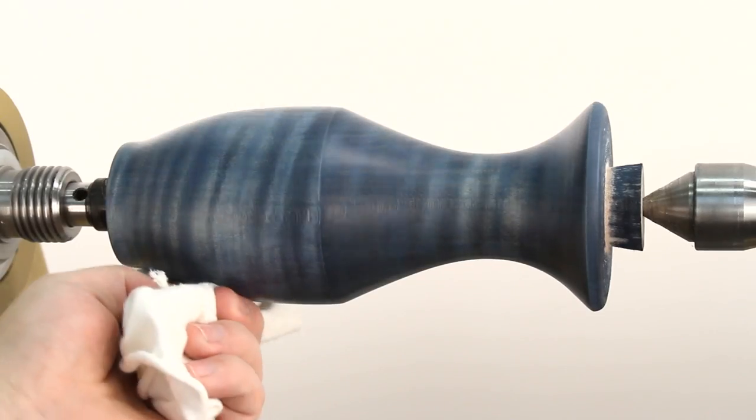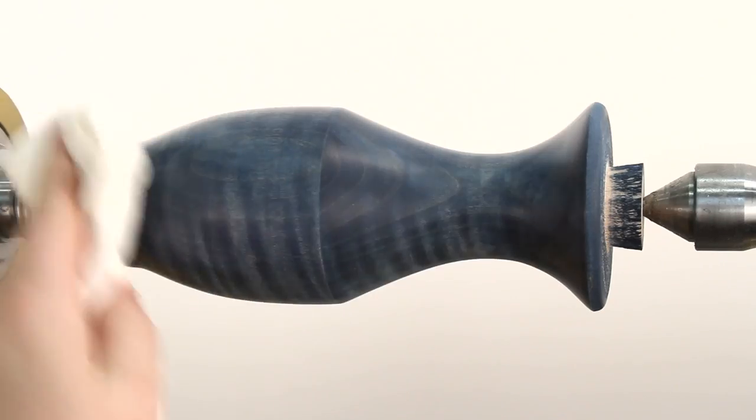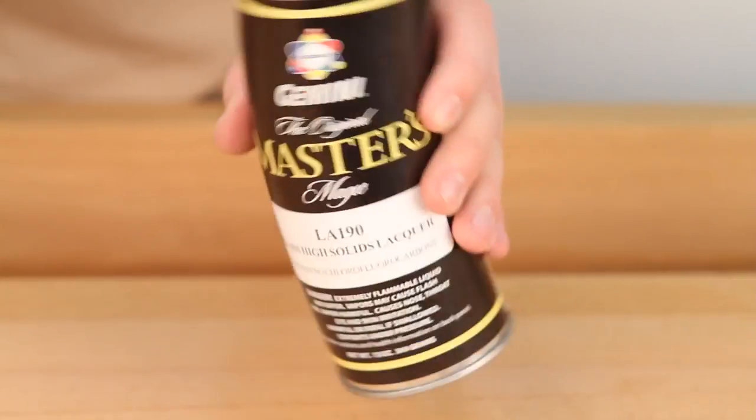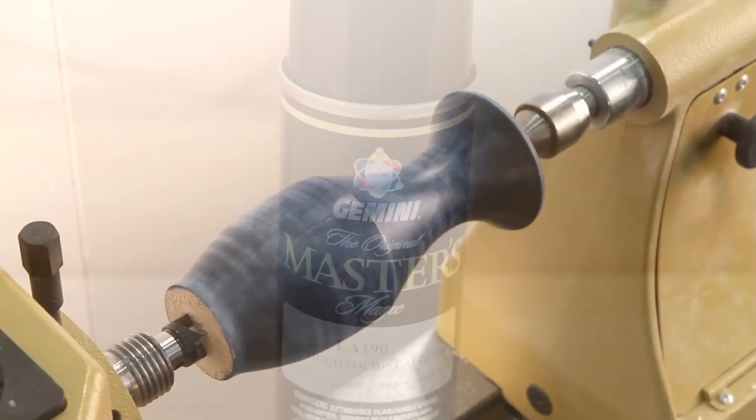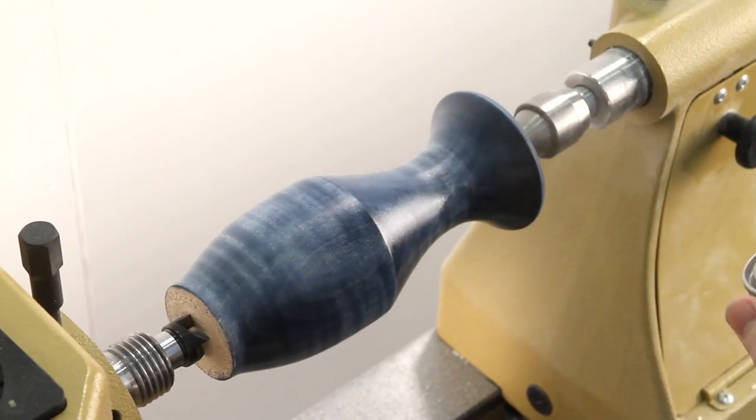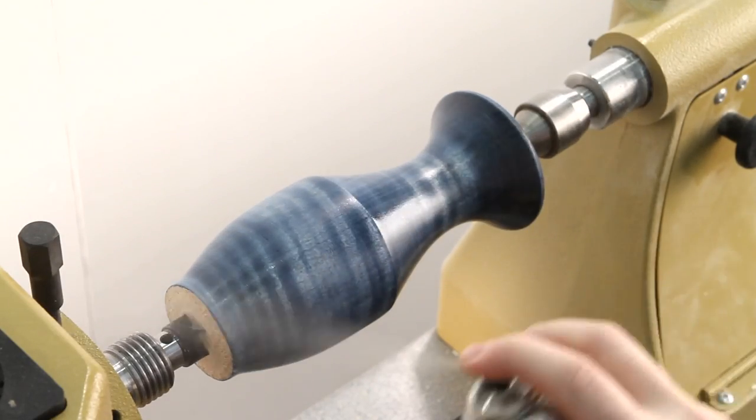We are now ready to apply a spray lacquer finish. Start by shaking the spray can to properly mix the contents. Now, spray on a light coat and avoid using too much or you'll have lacquer run.